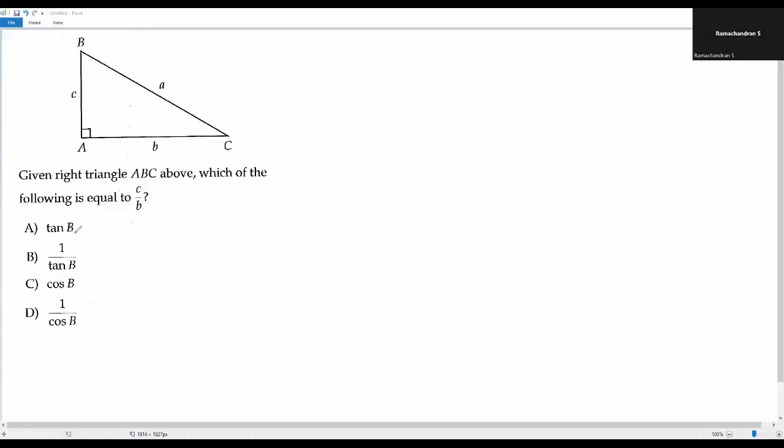When I look at the options, we have trigonometric ratio tangent in option A, the same trigonometric ratio tangent in option B, cosine in option C, and cosine in option D. In all four options, we have the angle measure at vertex B. So let's consider the angle measure we have at vertex B.